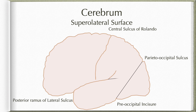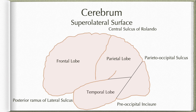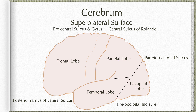First, we join the preoccipital notch with the parietooccipital sulcus by an imaginary line. Next, we draw another imaginary line joining the posterior ramus of the lateral sulcus with the first line. The area in front of the central sulcus and above the posterior ramus is the frontal lobe. The area behind the central sulcus, above the posterior ramus, and in front of the first imaginary line is the parietal lobe. The area below the posterior ramus is the temporal lobe, and the area behind the first imaginary line is the occipital lobe.